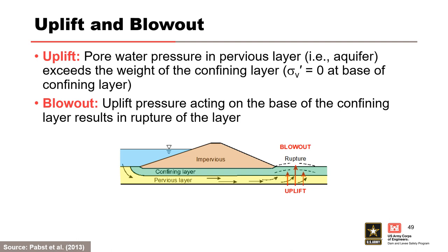If the uplift pressure exceeds the weight of the confining layer, uplift can initiate and result in significant changes in the seepage regime, forming a new seepage exit beneath the confining layer where hidden deterioration can occur from concentrated seepage if horizontal gradients are high enough. Blowout ruptures the confining layer, providing an unfiltered exit to the ground surface; the location of rupture may be the result of a defect and/or the location of maximum uplift pressure. When assessing, consider assumptions for seepage conditions, tailwater conditions, degree of saturation, and density of confining layer. Uplift can also initiate in partially saturated confining layers, especially for lightweight soils such as peat or soils with high organic content, or cohesive soils in cases of drought.